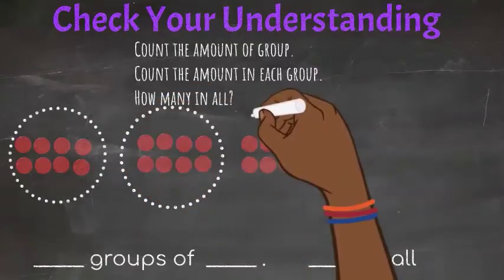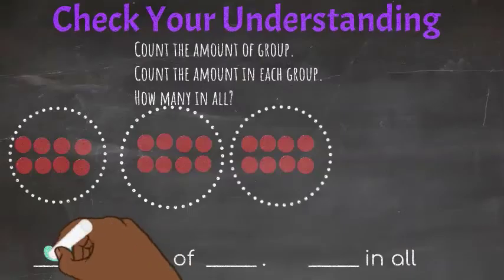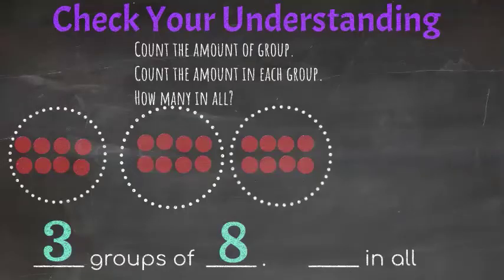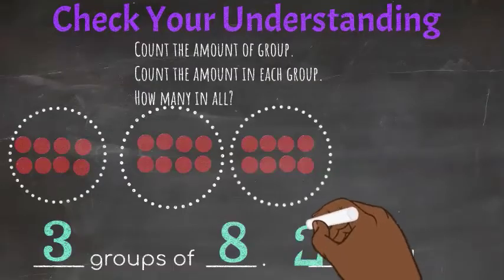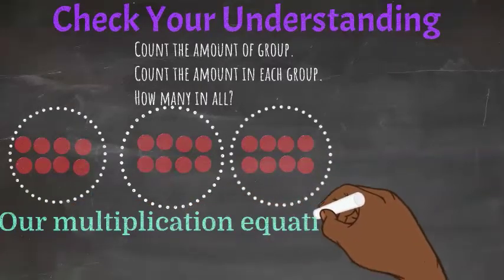Here is another set of groups. How many groups do you see? Three groups. And how many are in each group? Eight. And how many in all? That's right — a total of 24. Our multiplication equation for this problem is 3 times 8 equals 24.